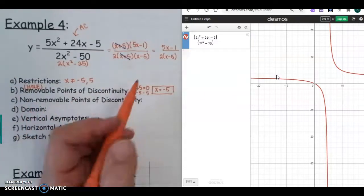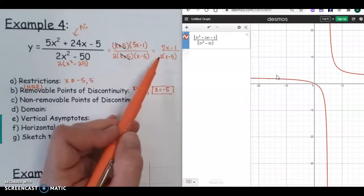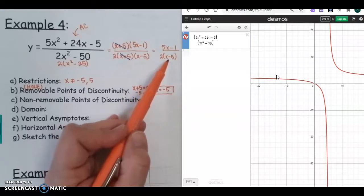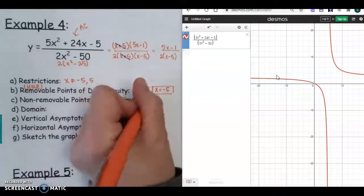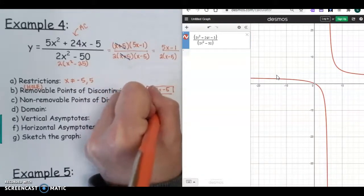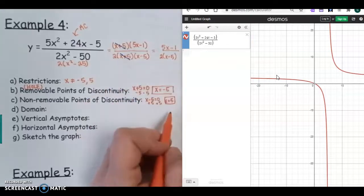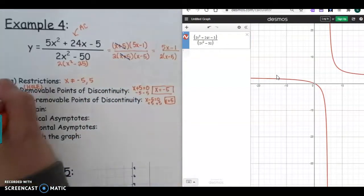The non-removable is the factor in the denominator you did not cross out. We're not going to worry about this 2, because it doesn't have a variable with it. So the one we did not cross out was X - 5, so we would set that equal to 0, add your 5. And remember, this is going to be the asymptote, the non-removable.